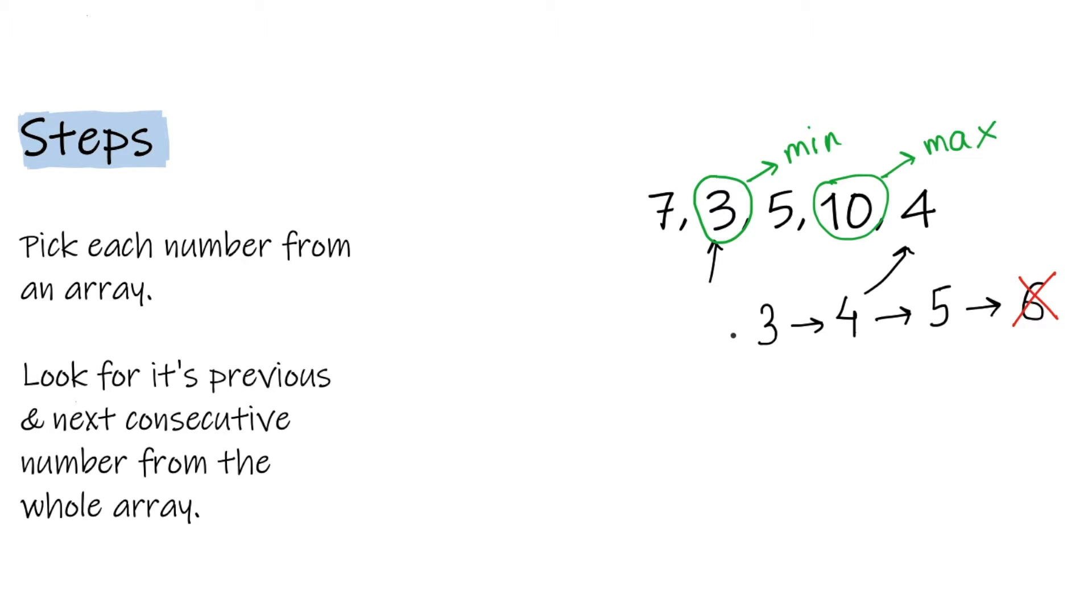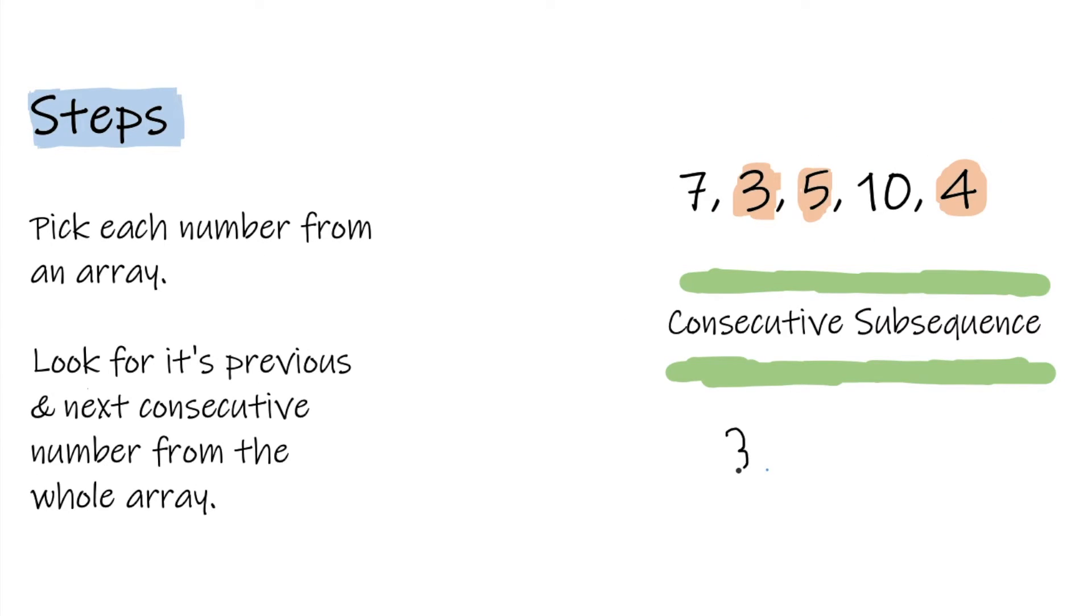After finding all forward consecutive numbers for 3, which are 4 and 5, we start looking for the previous consecutive number, 2, in the whole array. But since 3 is the smallest number in this array, there's no need to look backward. Now our longest consecutive subsequence count is 3: the numbers 3, 4, and 5.